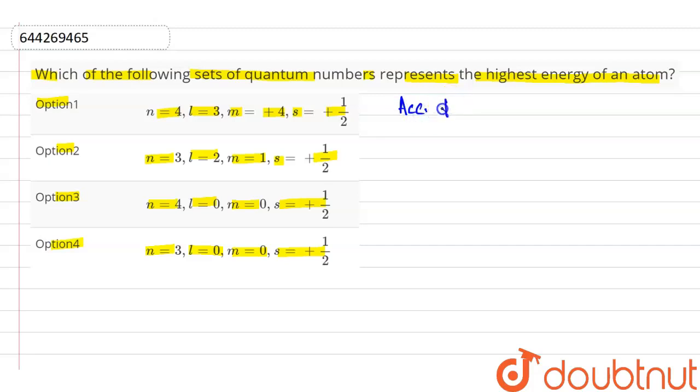According to Aufbau principle, more will be n plus l value, then more will be energy.